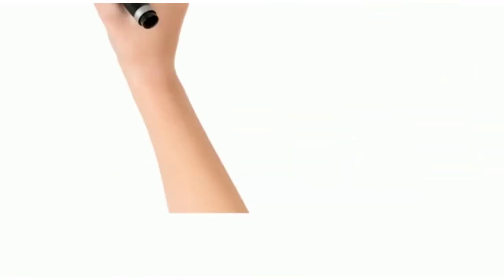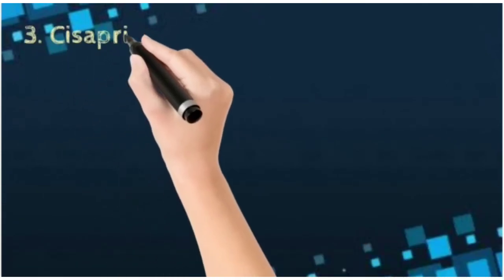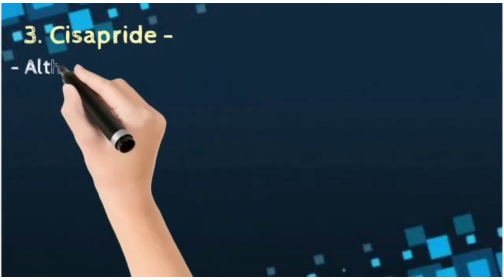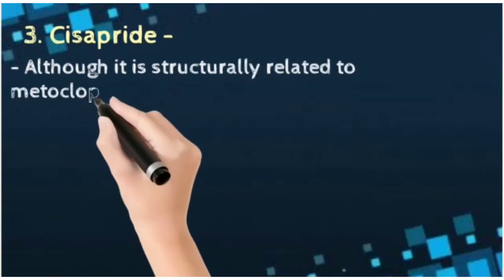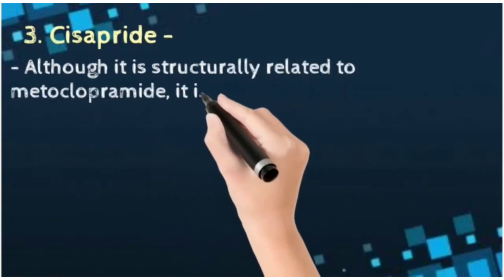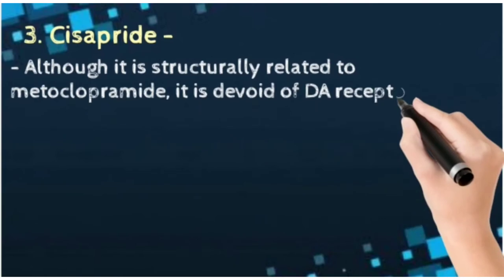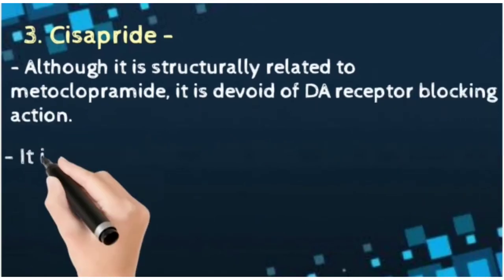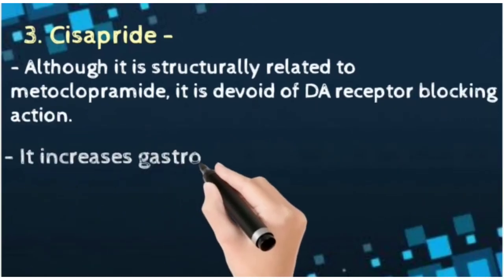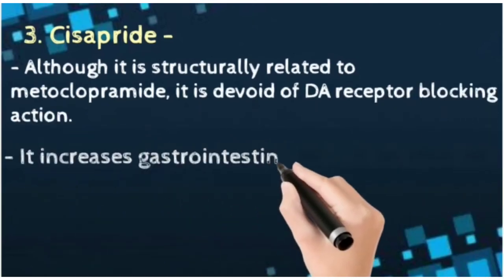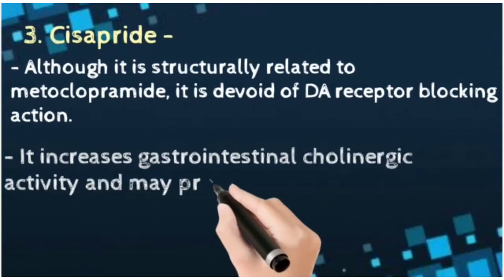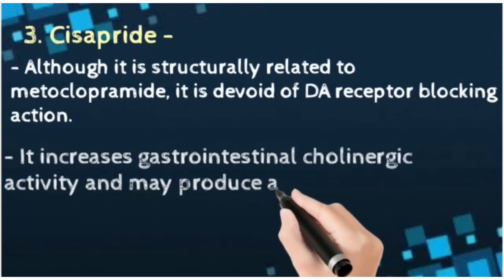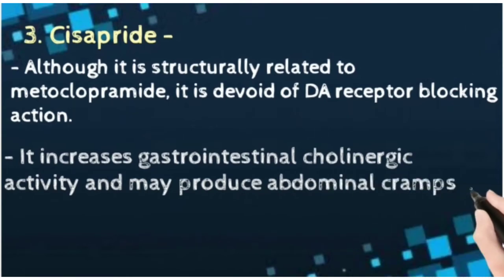Cisapride is structurally related to metoclopramide but is devoid of DA receptor blocking action. Instead, it increases gastrointestinal cholinergic activity and may produce abdominal cramps and diarrhea.